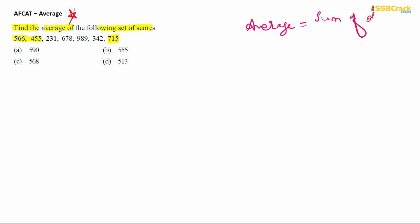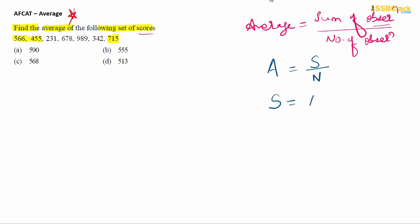The formula is: Mean (Average) = Sum of observations divided by Number of observations. The observations here are simply the data values — the scores. Depending on the question, these observations can change; it can be ages, number of innings, and so on. The shortcut formula to remember is: A = S/N, so when we need the sum, S = A × N.